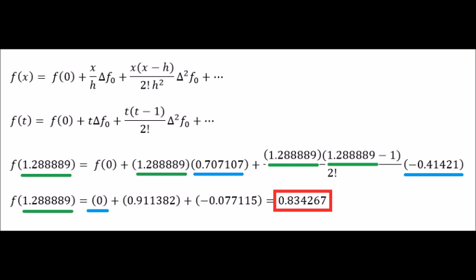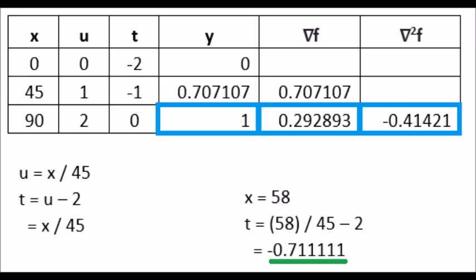Since we set h equal to 1, we can use the expression in the second line. In the third line, I plug in the numbers, which gives me 0.834267. Within rounding, this is the number we got from Excel's second order polynomial.